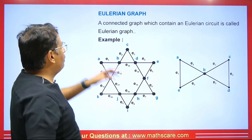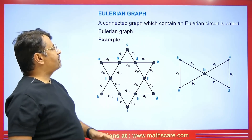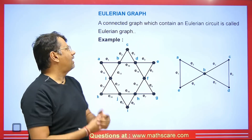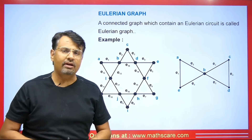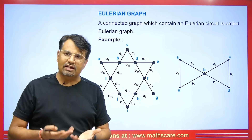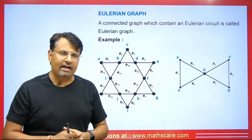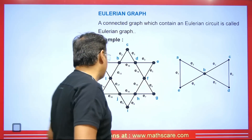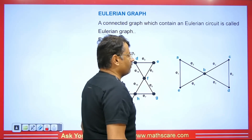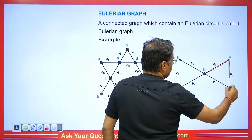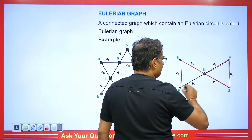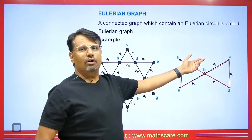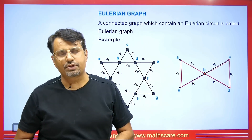Now let's see what is an Eulerian graph. A connected graph which contains an Eulerian circuit is called an Eulerian graph. If we have a connected graph and it covers the Eulerian circuit, then this type of graph is called an Eulerian graph. For example, this graph has an Eulerian circuit and all vertices are connected, so it is a Eulerian graph. Another example is also a Eulerian graph — starting from a vertex, covering all edges, ending where it started, and all vertices connected.